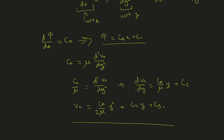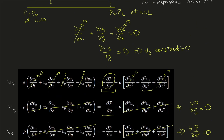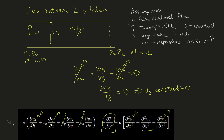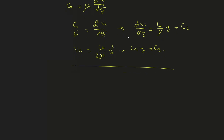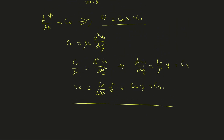We have four boundary conditions. For velocity: the no-slip condition gives vx = 0 at y = +h and vx = 0 at y = -h, since both plates are stationary. For pressure: P = P0 at x = 0, and P = PL at x = L. Let's first solve the pressure equation and then use that in the velocity equation.